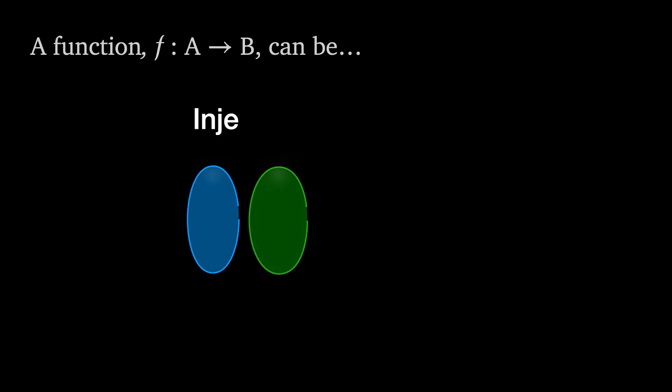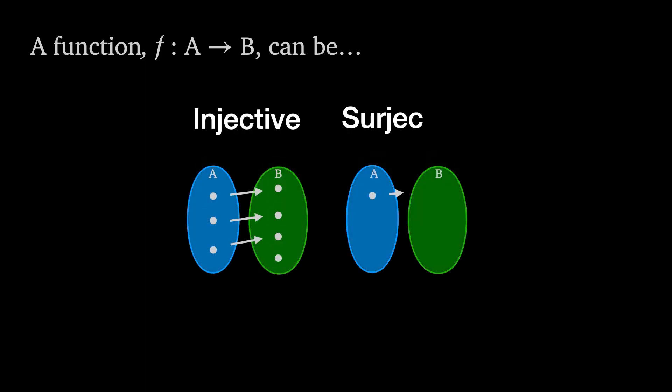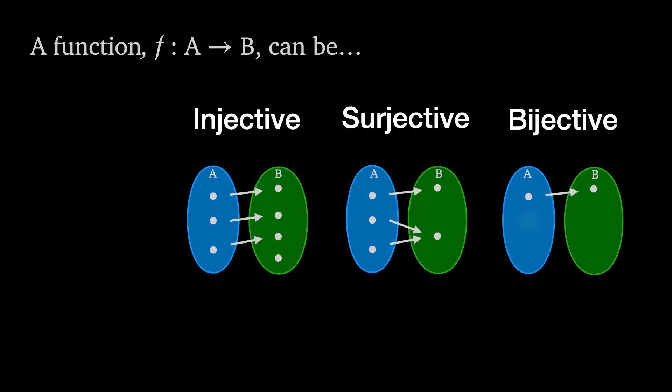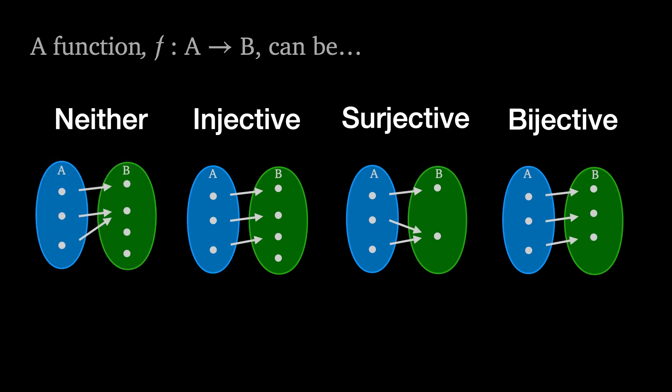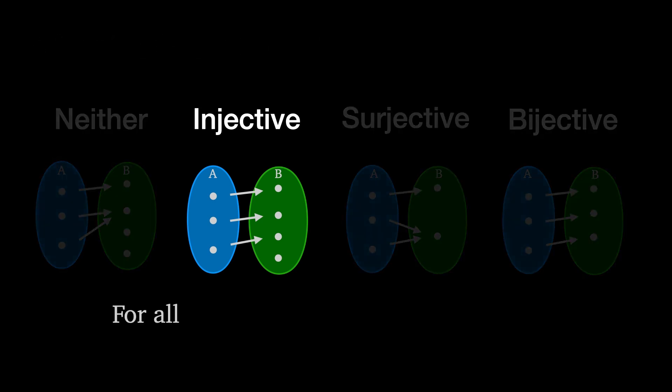A function f from A to B can be injective, surjective, bijective or none of the above. An injective function doesn't map two distinct elements in A onto the same element in B. We say that for x and y in A, if f(x) equals f(y), then x must equal y. Injective functions are sometimes called one-to-one functions.